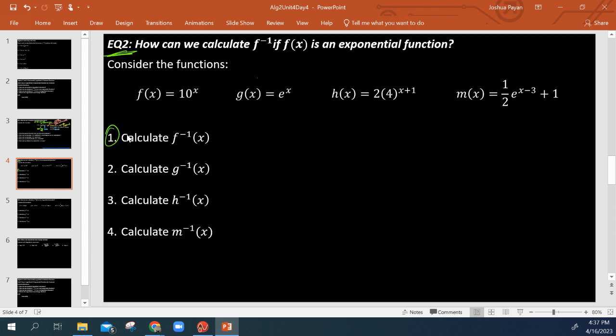So if we wanted to calculate F inverse, the inverse of F right here, well, nothing changes. We have F equals 10 to the X. Our first step when we're doing this is to flip X and F, or G, or whatever letter we're using as the dependent variable. So I'm going to say X is now equal to 10 to the F.